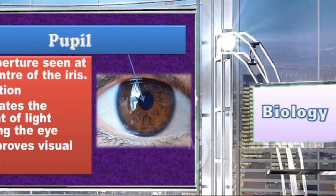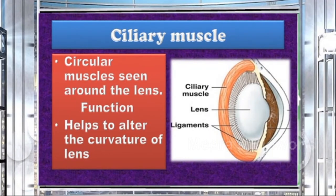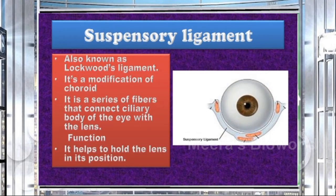Ciliary muscles are circular muscles seen around the lens; they help to alter the curvature of the lens. Suspensory ligaments, also a modification of the choroid layer, are commonly known as Lockwood's ligament. They are a series of fibers that connect the ciliary body of the eye with the lens and help to hold the lens in its position.